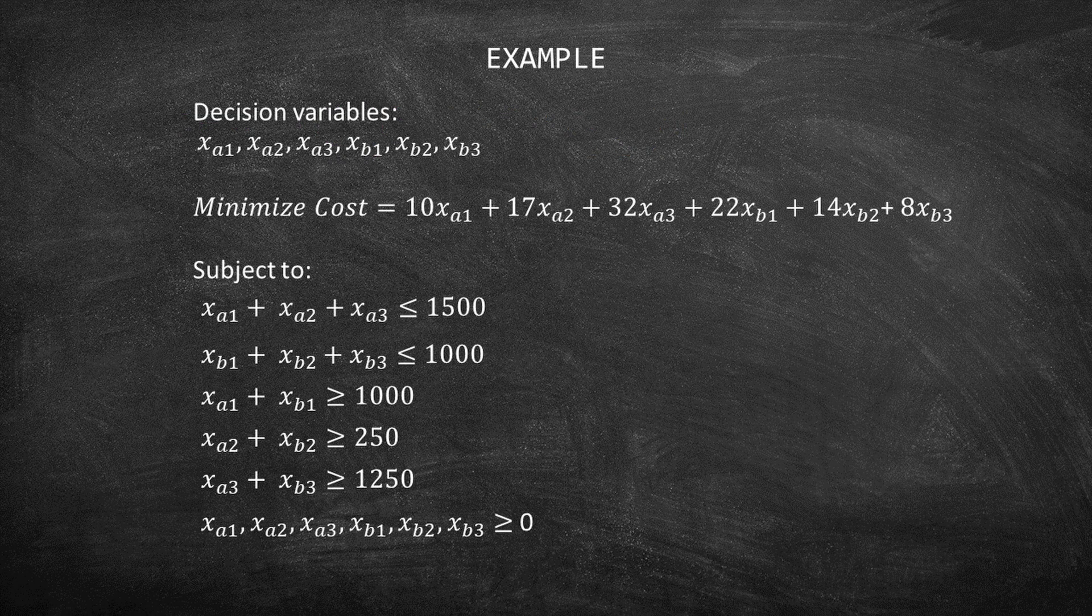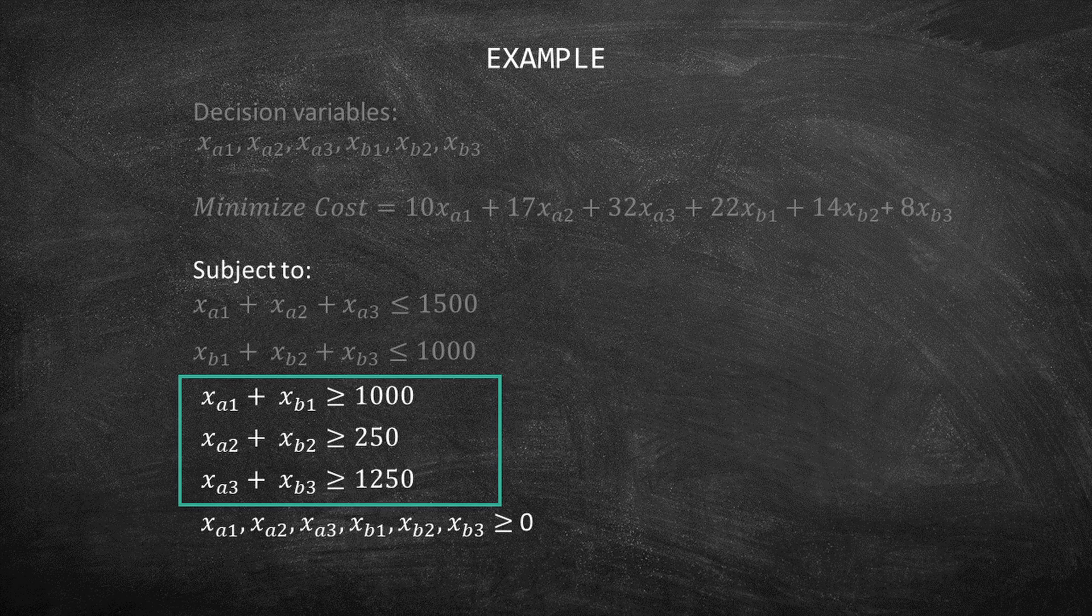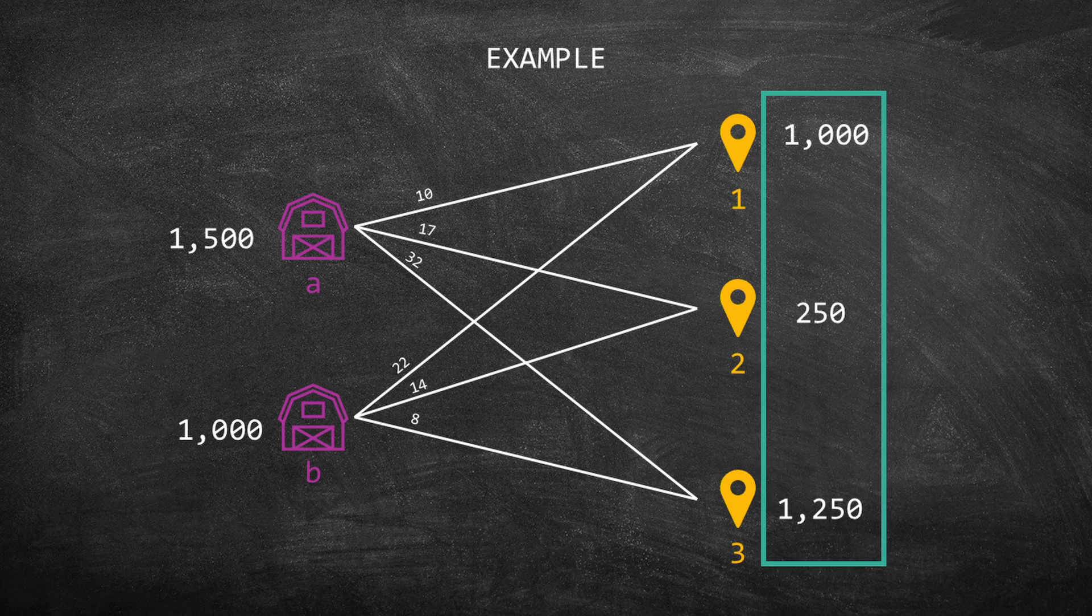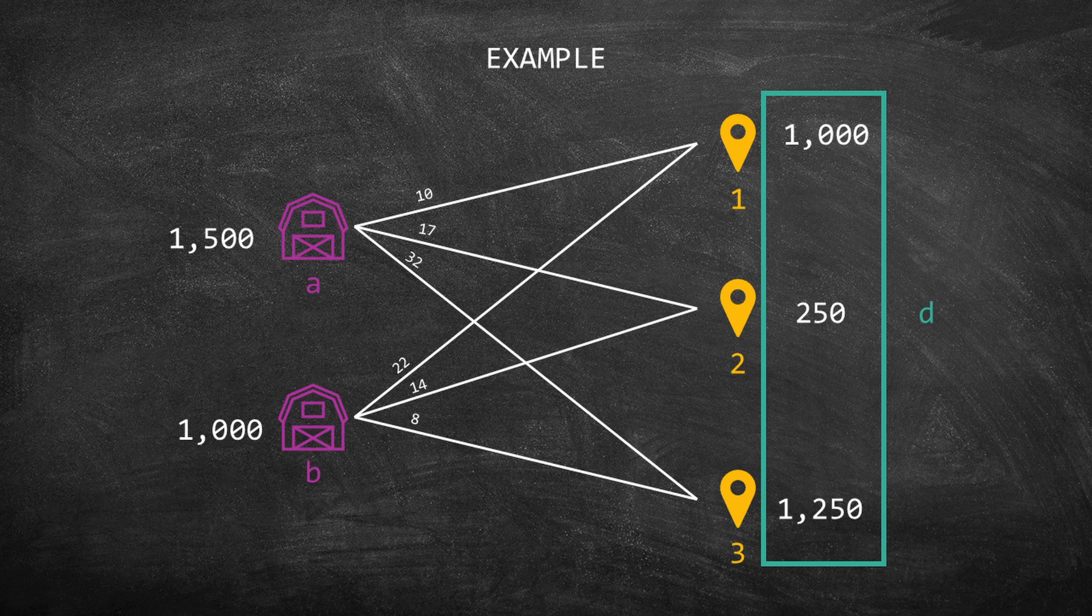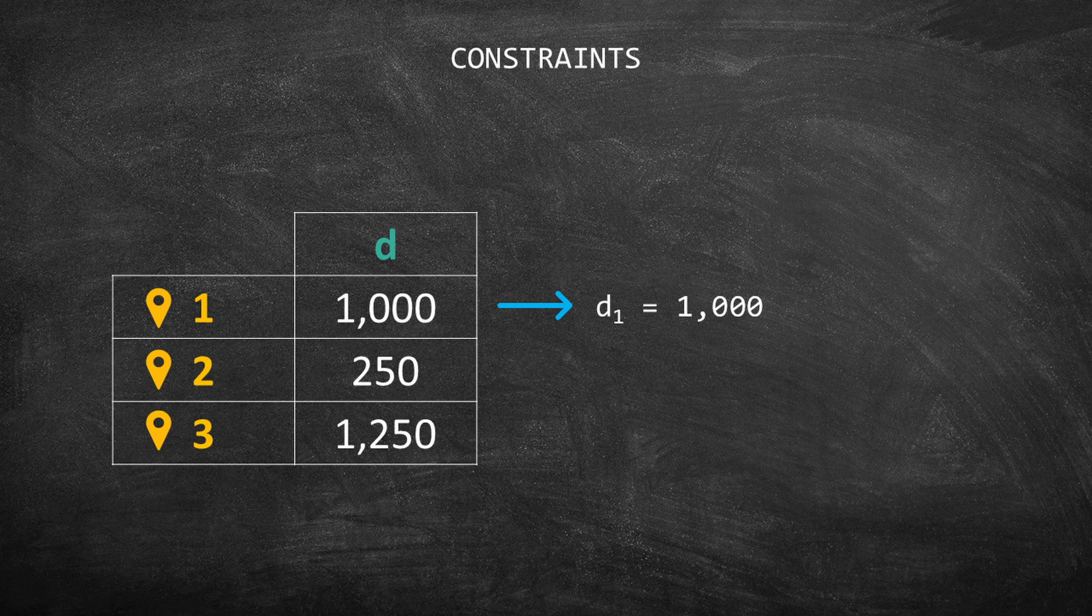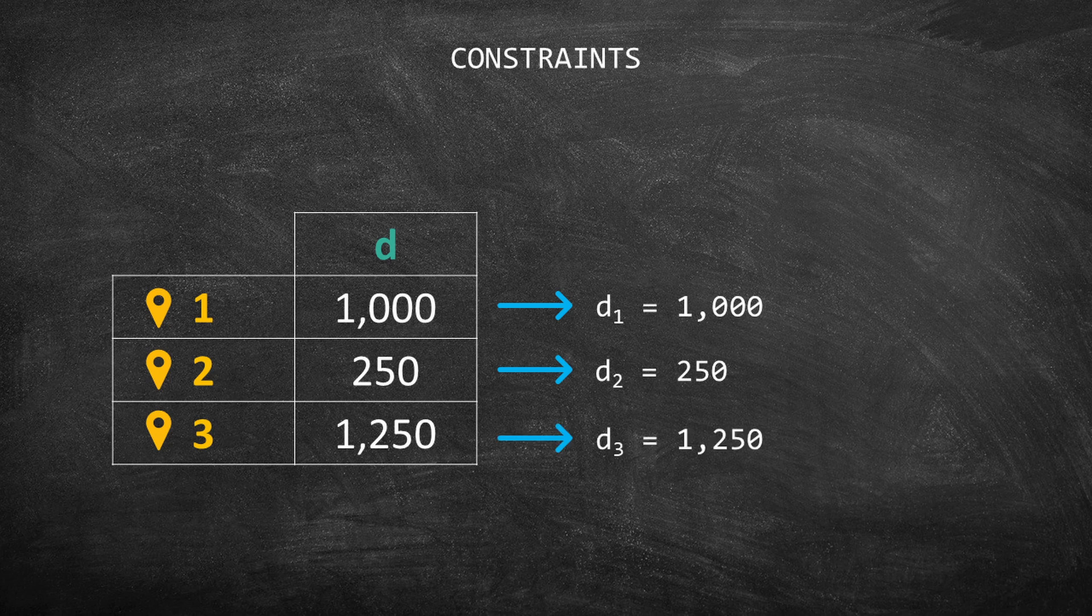Now, let's move to the next set of constraints. If we go back to our network representation, you see that each customer has a demand. For example, customer 1 has a demand of 1,000 products. We can denote the demand by the letter D. If you check the table, D index 1 is 1,000, D index 2 is 250, and D index 3 is 1,250.